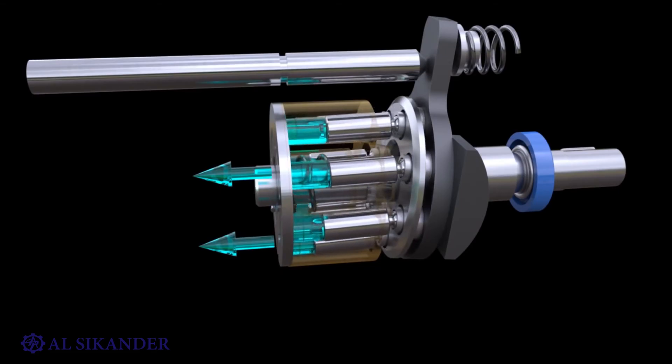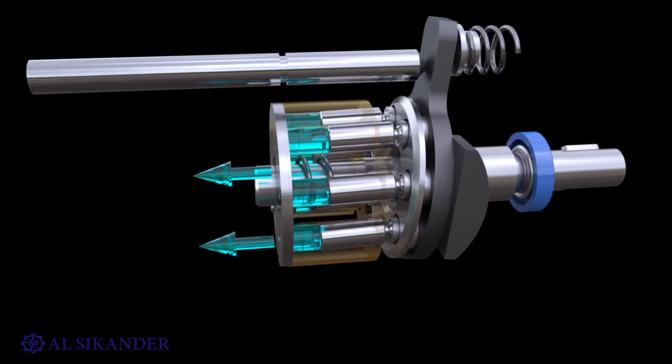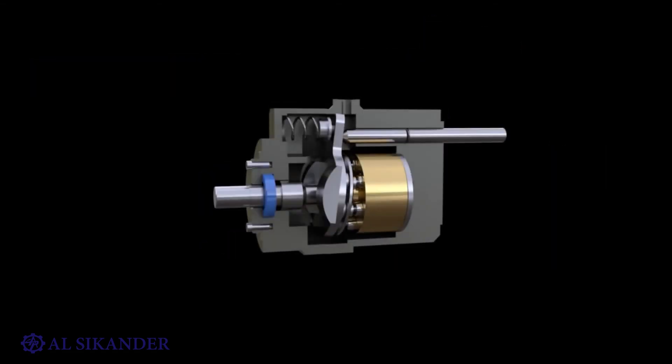To regulate the flow of the pump, it is necessary to vary the angle of the disc, the washer on which the pistons rest.